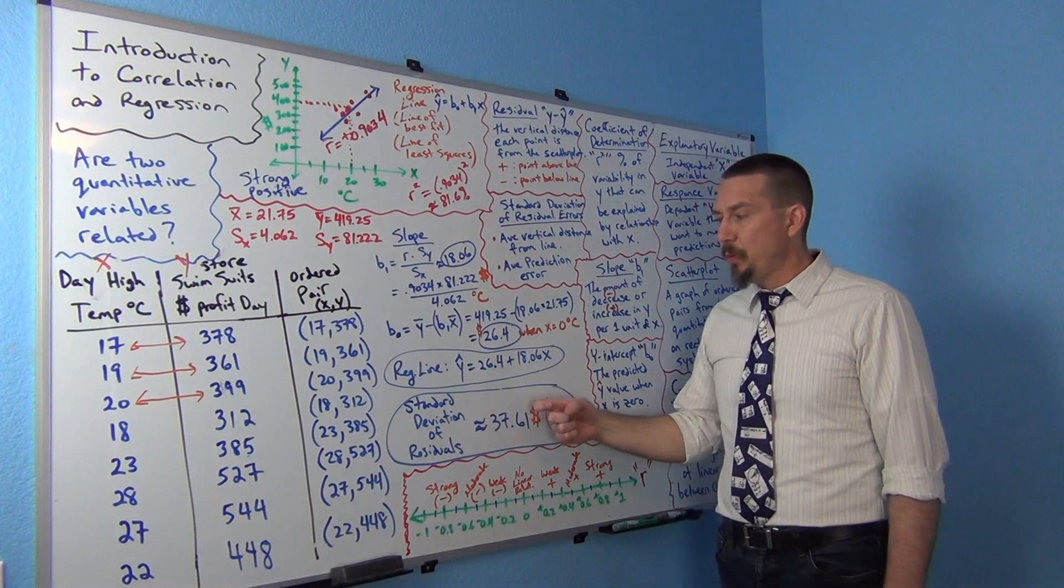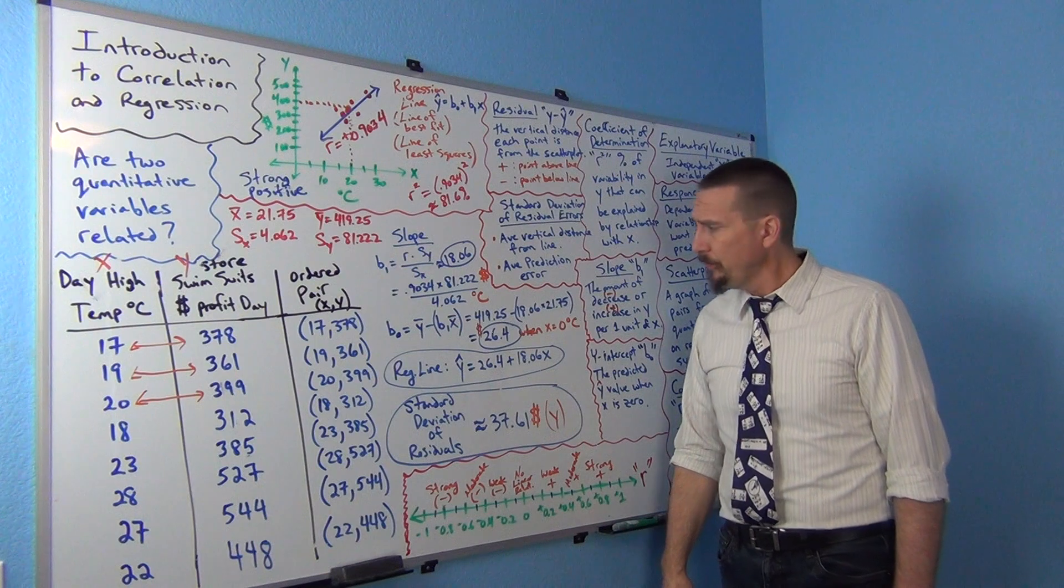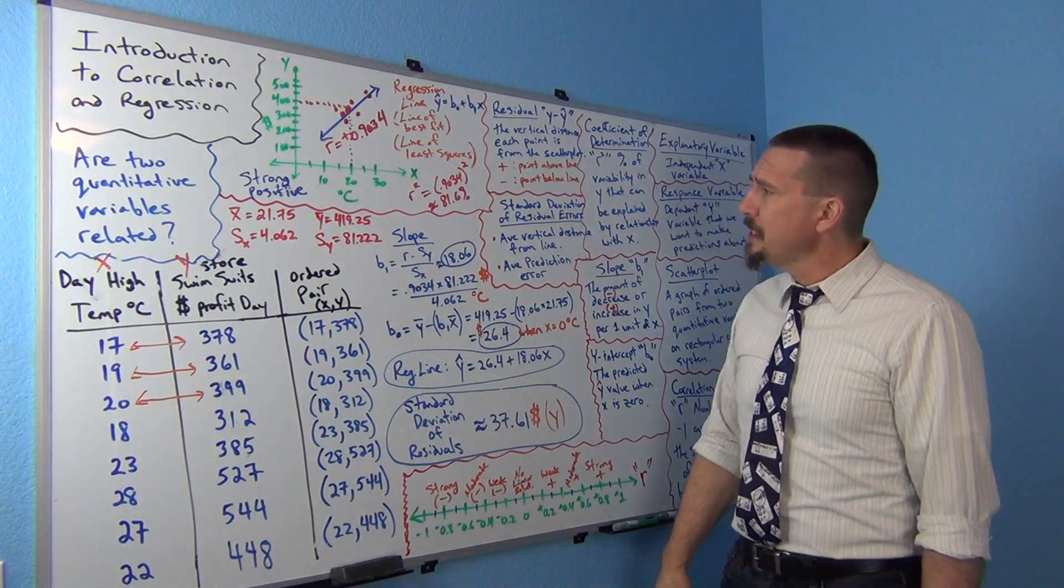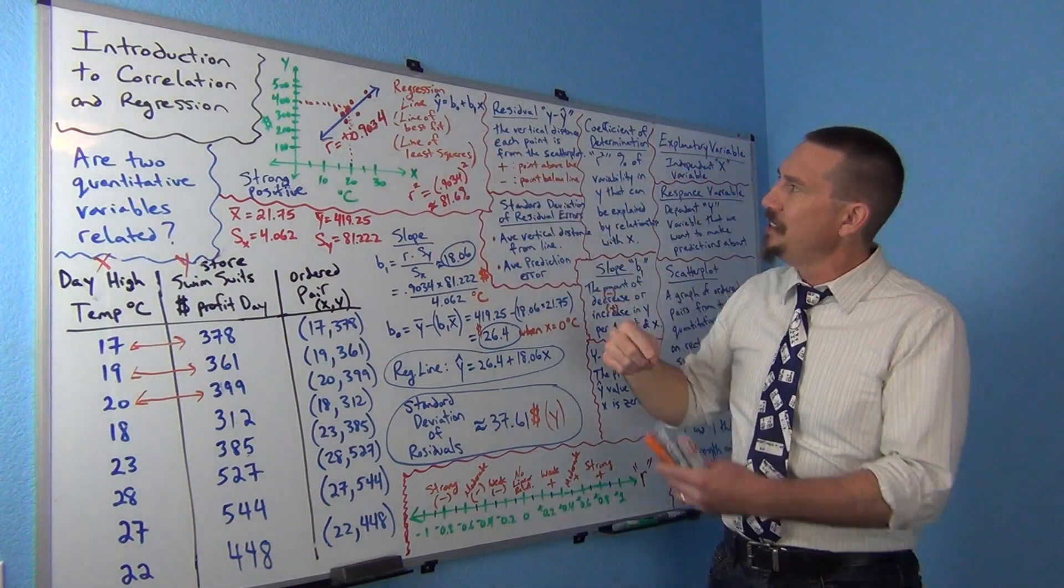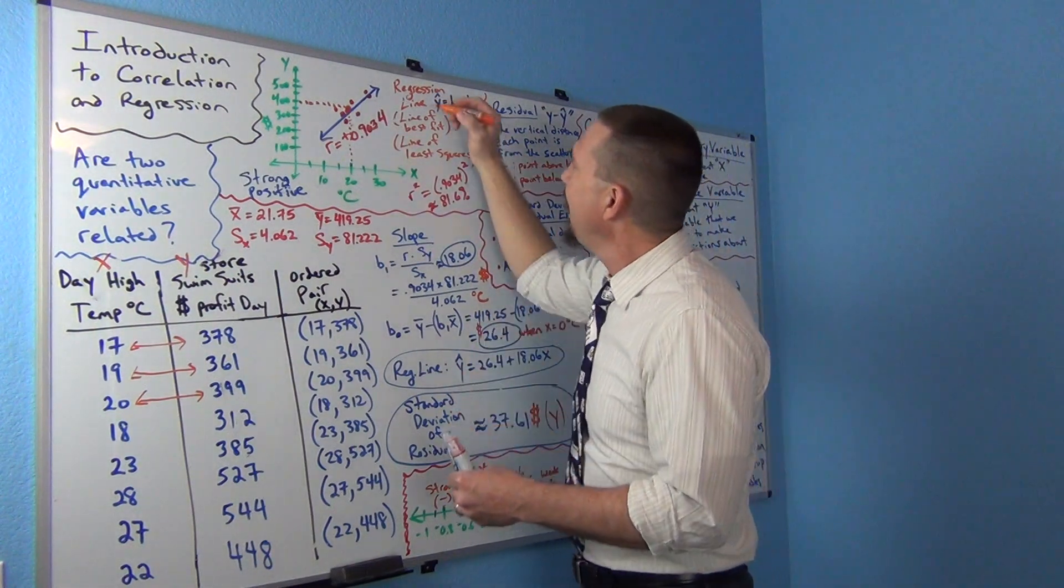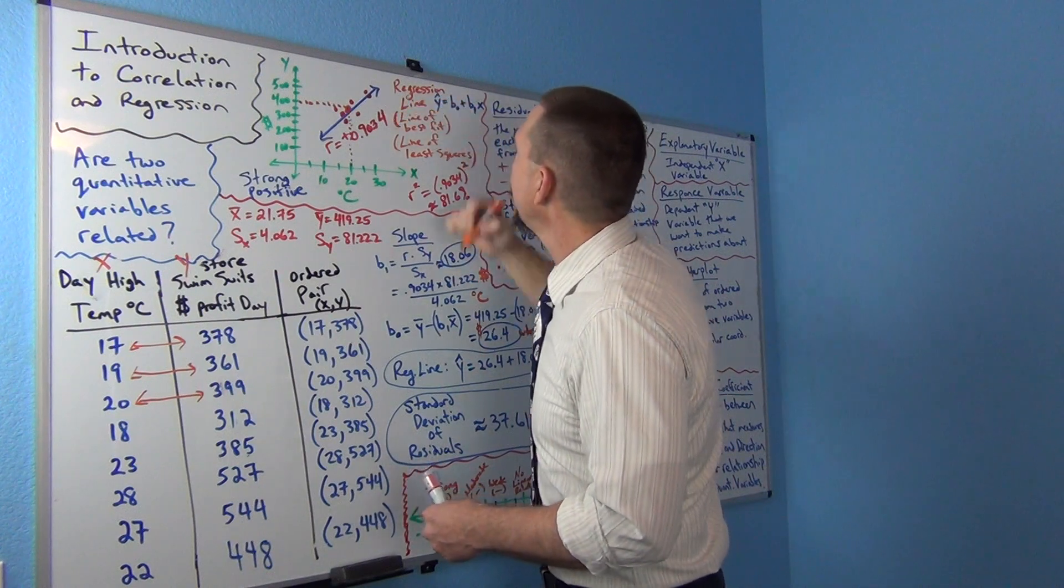Okay, that's kind of the way you want to think of standard deviation of the residuals. All right. Now let's get into how does this regression line, line of best fit, line of least squares, how does that actually get calculated?